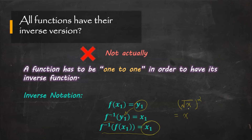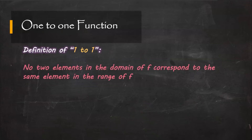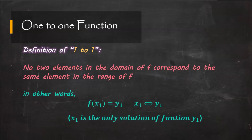The square and the square root are pretty much like the inverse in a function. So now let's see the definition of 1-to-1. No two elements in the domain of function f correspond to the same element in the range of function f. Each x in the domain has exactly one image in the range, and no y in the range is the image of more than one x in the domain — meaning x₁ is the only solution for y₁. That's so-called 1-to-1: one x corresponds to only one y, and vice versa.